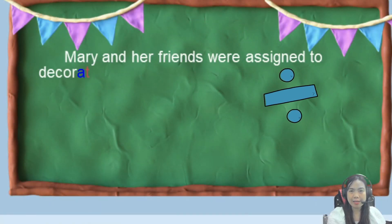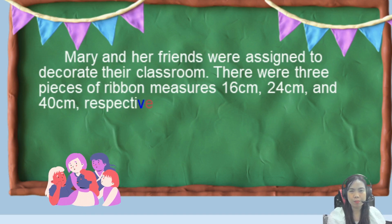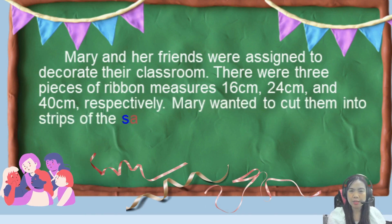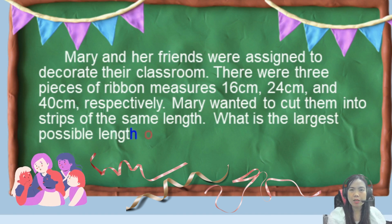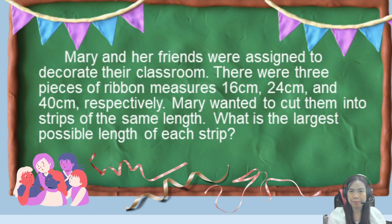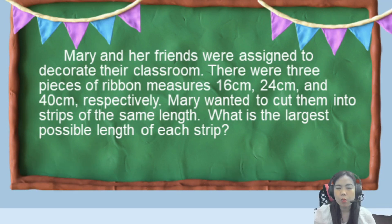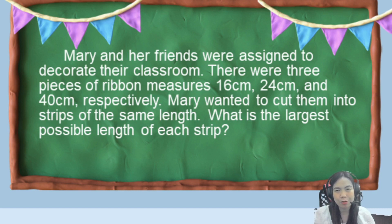Let's read and analyze this problem. Mary and her friends were assigned to decorate their classroom. There were 3 pieces of ribbon measuring 16 cm, 24 cm, and 40 cm respectively. Mary wanted to cut them into strips of the same length. What is the largest possible length of each strip? We want to know the largest possible length that Mary can cut from the 3 pieces of ribbon, so we are going to find the GCF of 16, 24, and 40 cm.